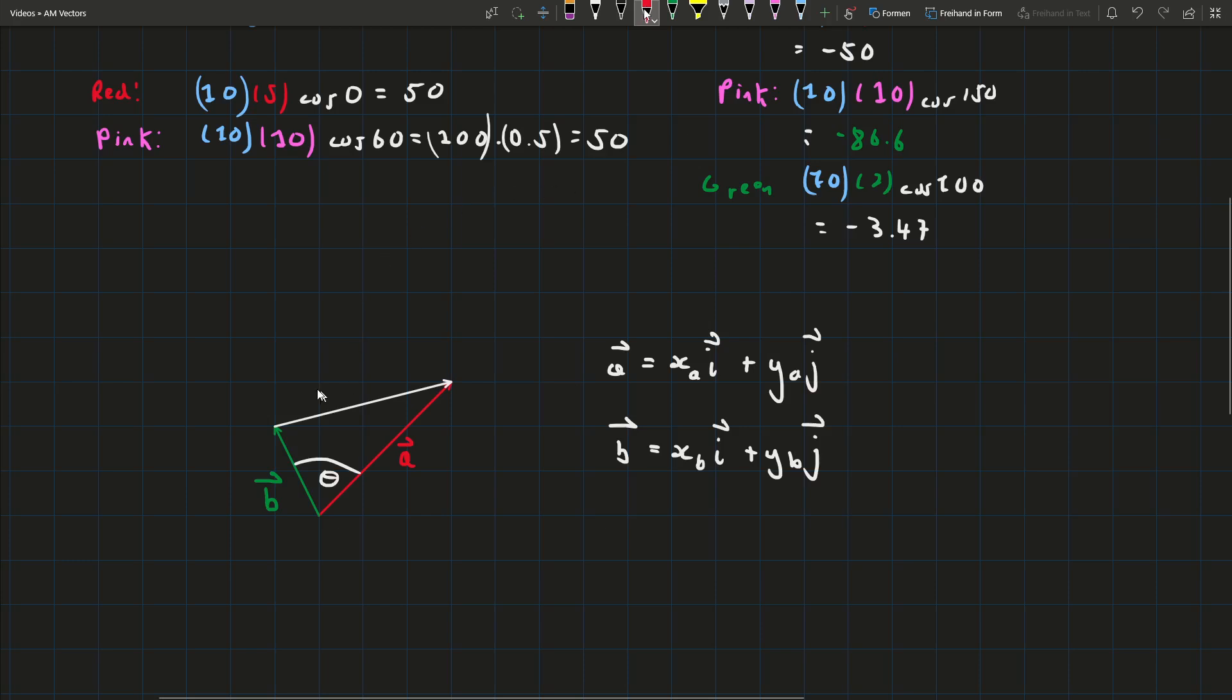One way that you can think about vectors is a journey. So this white vector is the same as starting here and ending here. So how can we do that in terms of vectors that we actually know? Well we see that we can go along vector b we can go down vector b like this and we can go up vector a like that and then we end at our destination here.